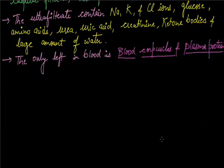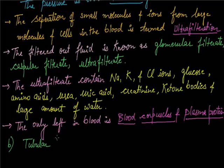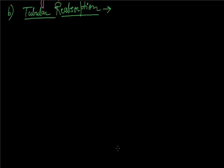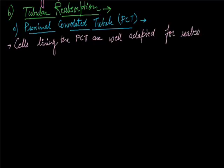Next we are going to discuss tubular reabsorption. First in tubular reabsorption, we will discuss the proximal convoluted tubule or PCT. In the PCT, cells lining the PCT are well adapted for reabsorption.